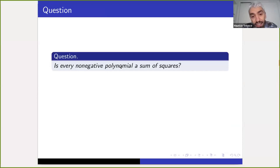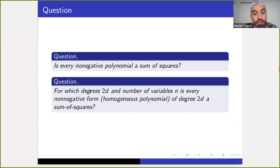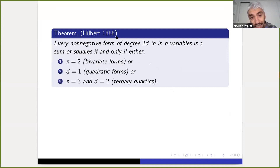It's natural to ask: do the two cones agree? If they did, you could take your important problem, formulate it using P, and then solve it using Sigma. So it's really important to know whether this is true — more specifically, for which degrees 2D and numbers of variables n does it happen that every non-negative form of degree 2D is a sum of squares? This question was asked and thoroughly answered by Hilbert himself in 1888.